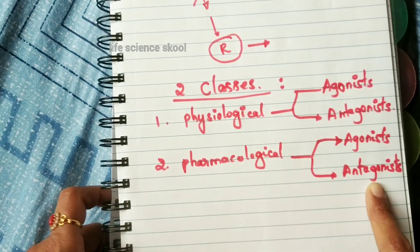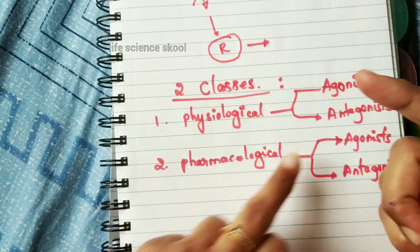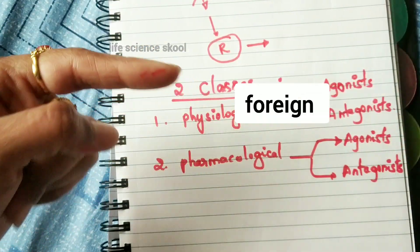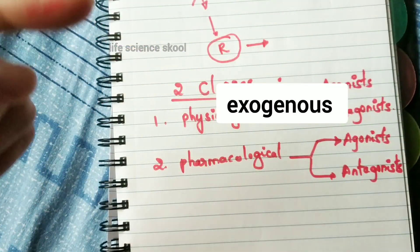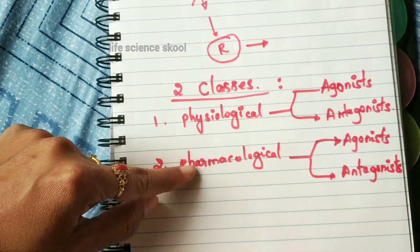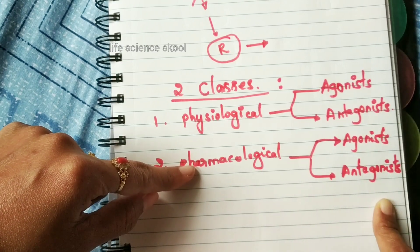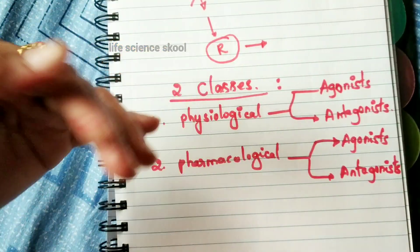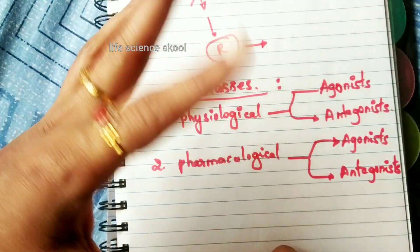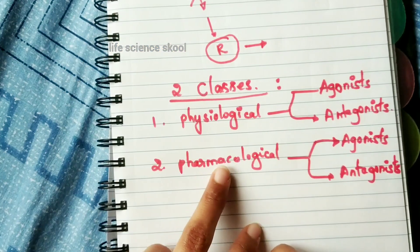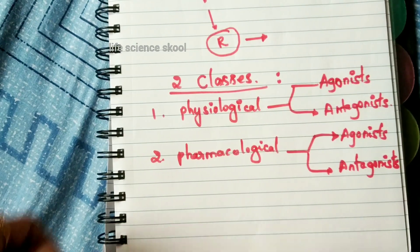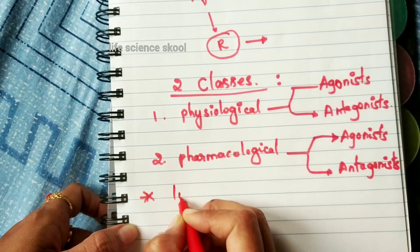The second class is pharmacological agonist and antagonist. If agonists and antagonists are synthetically produced, or foreign to the body, or exogenous to the organism, then these are called pharmacological agonists and antagonists.